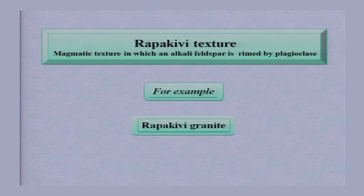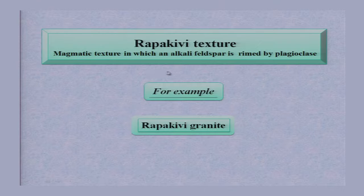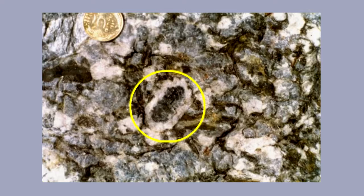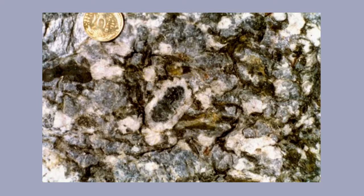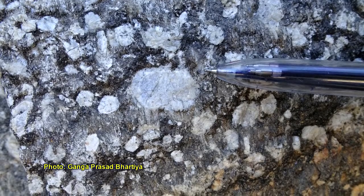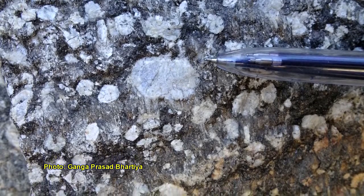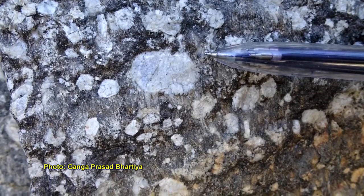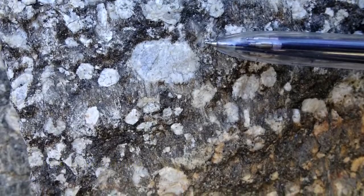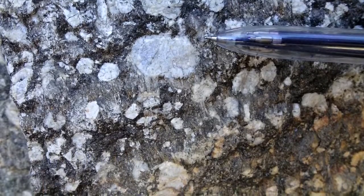Hello learners. In this program, I will discuss about the Rapakivi texture. It is a magmatic texture in which alkali feldspar is rimmed by plagioclase. Remember, alkali feldspar is rimmed by plagioclase. Plagioclase is calcic plagioclase. An example is Rapakivi granite.